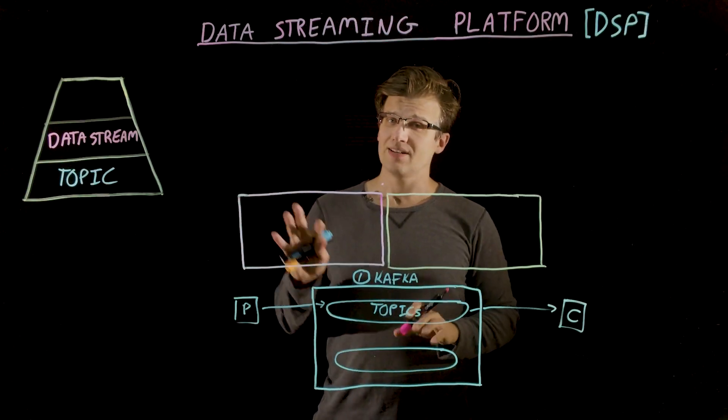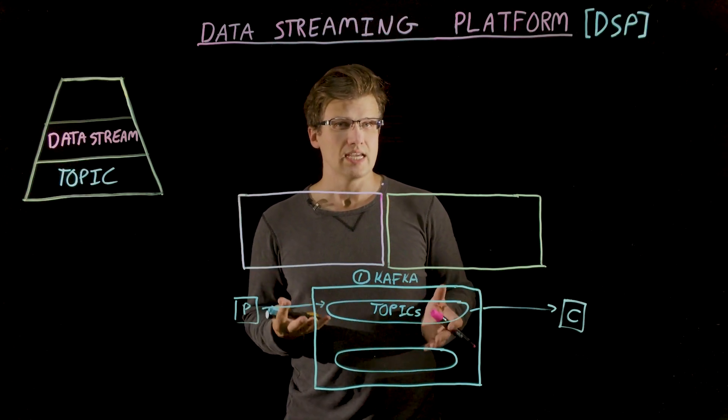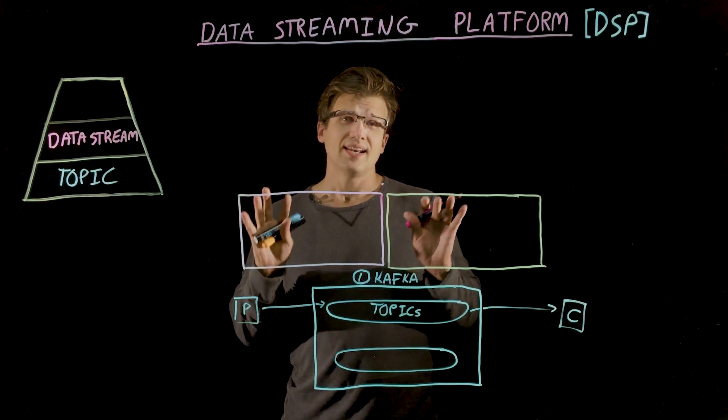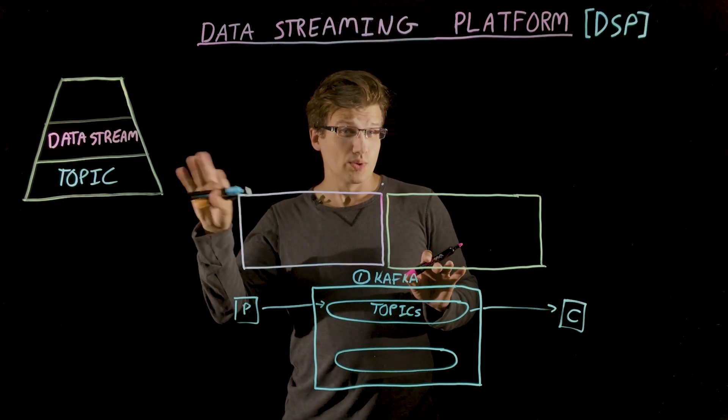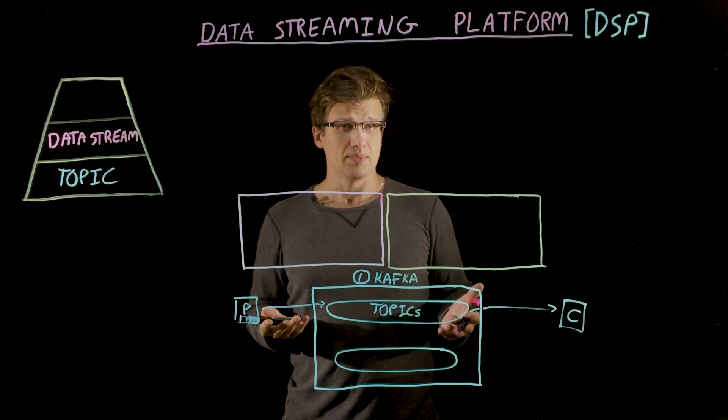A data stream is very similar to a table in a database. There's an explicit schema, data quality rules, and access controls. Unlike a basic topic that has no real restrictions, a data stream aims for a higher level of quality and reliability.